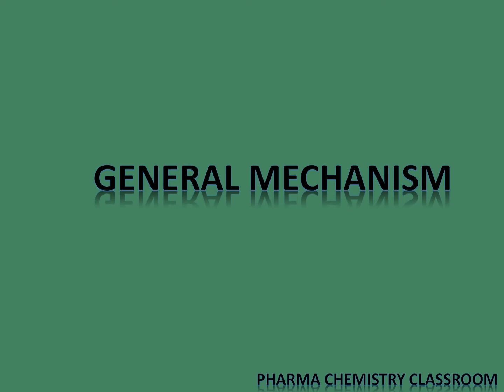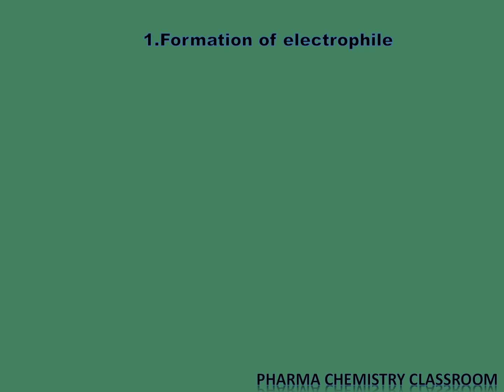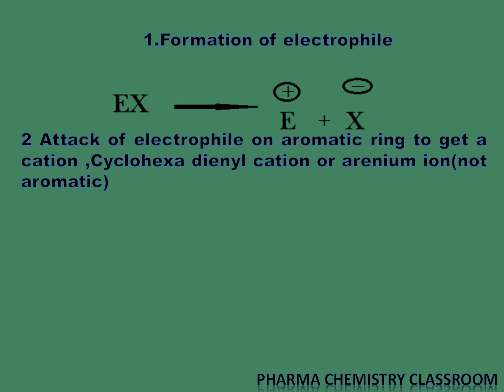We are going to focus on the general mechanism now. The first step in any electrophilic aromatic substitution reaction is formation of the electrophile. Once the electrophile is formed, the second step happens: the attack of the electrophile on the aromatic ring to get a cation known as the cyclohexadienyl cation or arenium ion, which is not aromatic but is resonance stabilized.